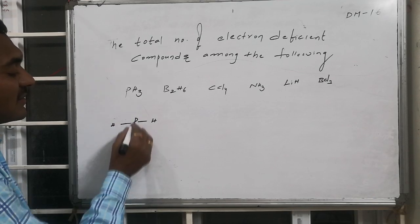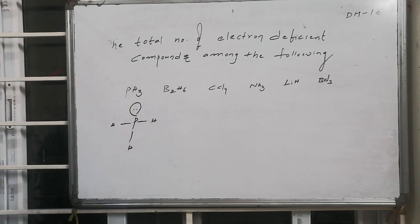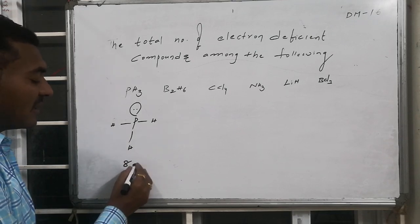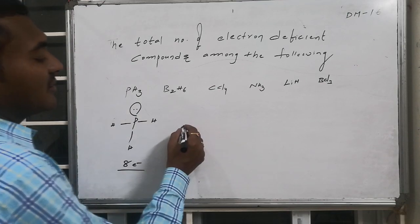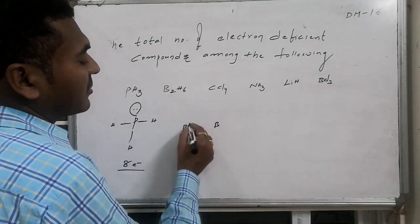Phosphine is present like this - phosphorus is making three connectivities followed by one lone pair. The total number of electrons associated with the valency shell of phosphorus are eight. Whereas if I go for diborane, diborane is an electron deficient compound.